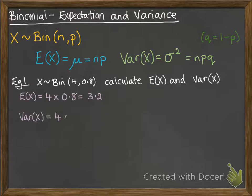And the variance, 4 times 0.8 times 0.2, because q is 1 minus the 0.8, which gives us 0.64.